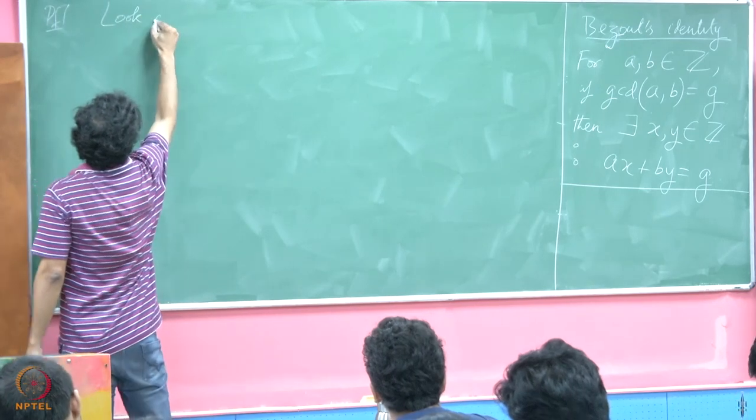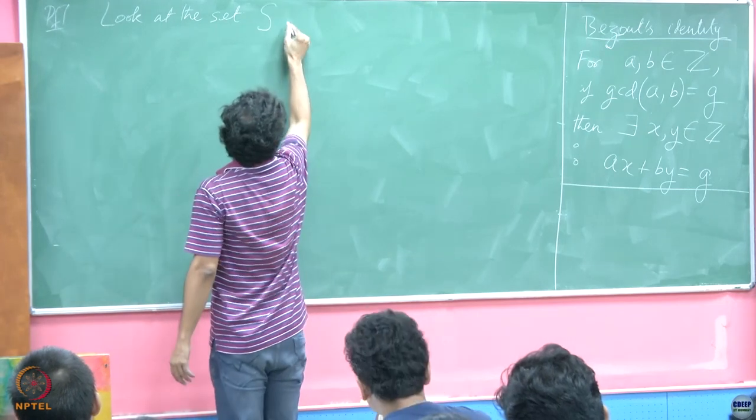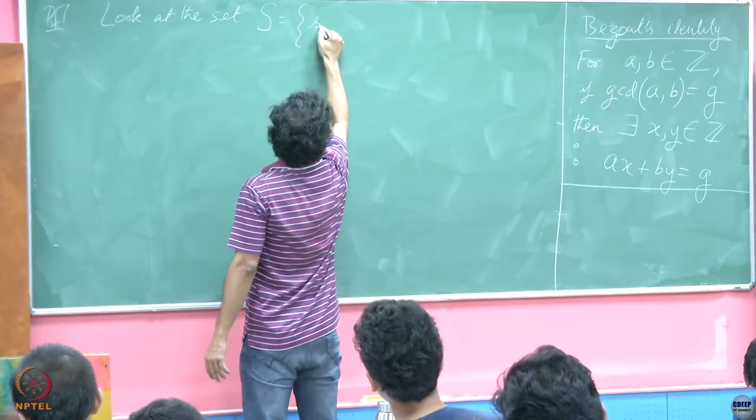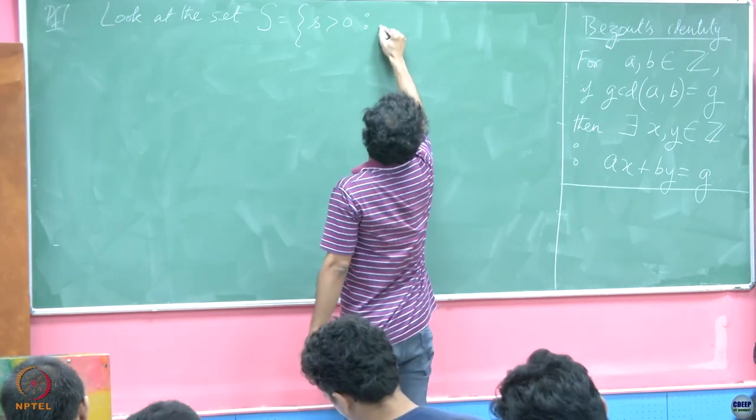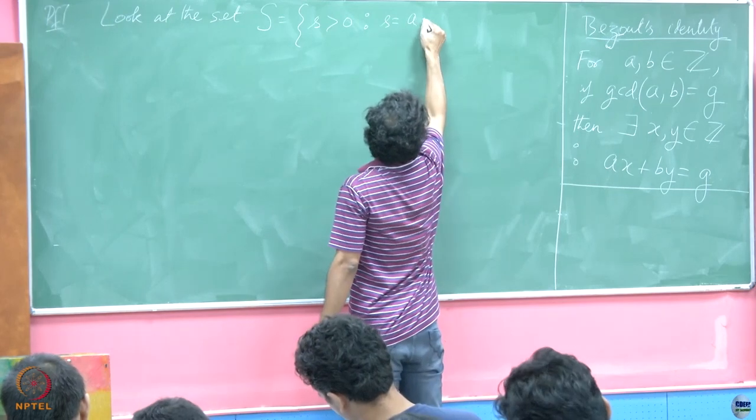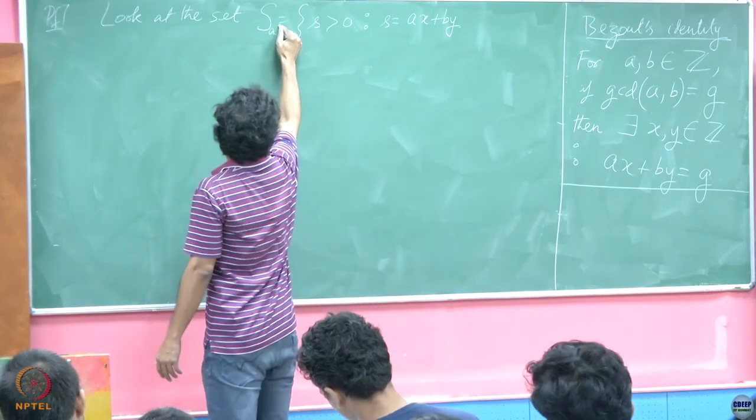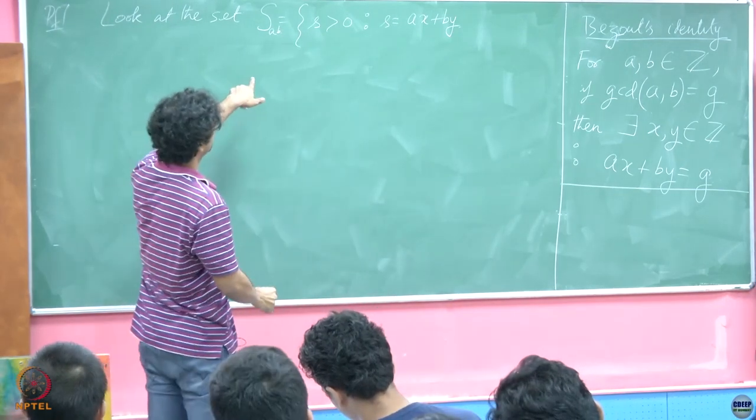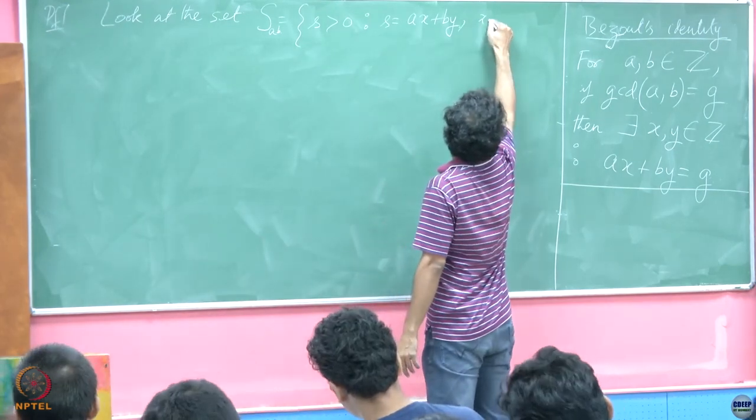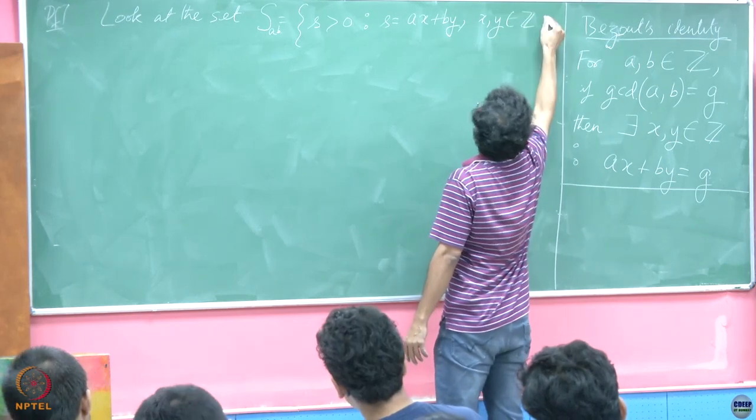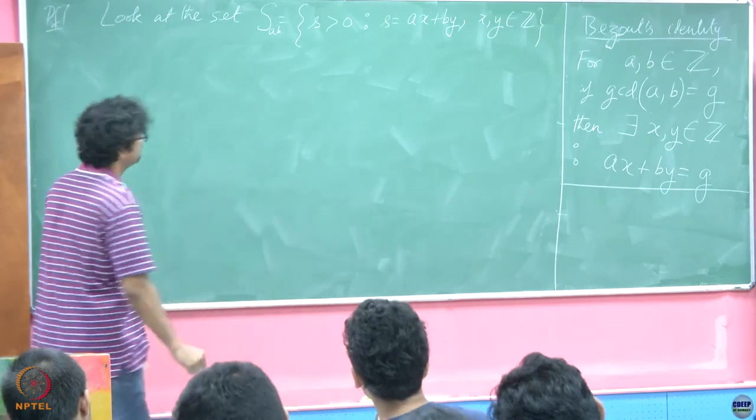So, here is again a sketch of the proof. Look at the set S which is a collection of all numbers that are positive and that can be represented as Ax plus By. In fact, you can give it a name S_AB because A and B are fixed. Ax plus By for x, y being integers. Positive, negative both allowed.